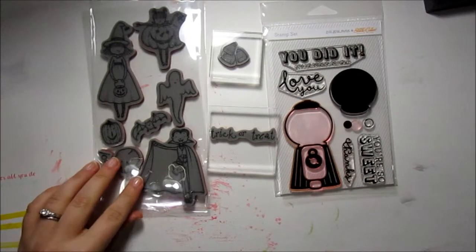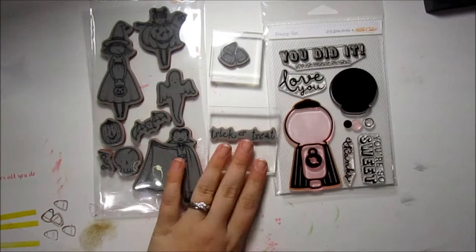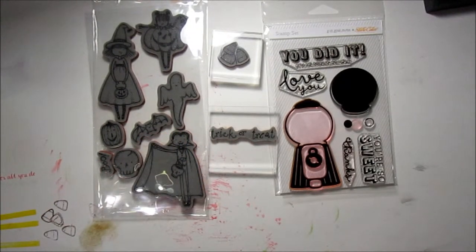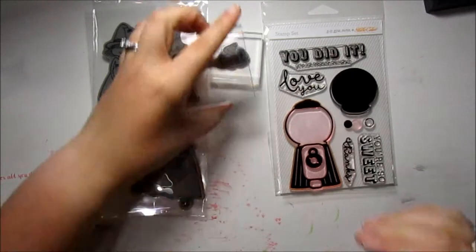I'm going to be using the little candy corn and the sentiment from this Recollections stamp set. It is from probably like four years ago, so I'm not sure if you can get it anymore, but all you need is just some kind of Halloween candy stamp and your sentiment.